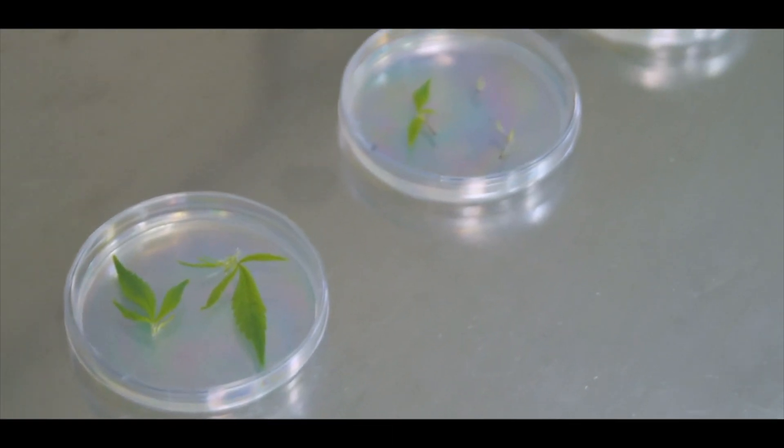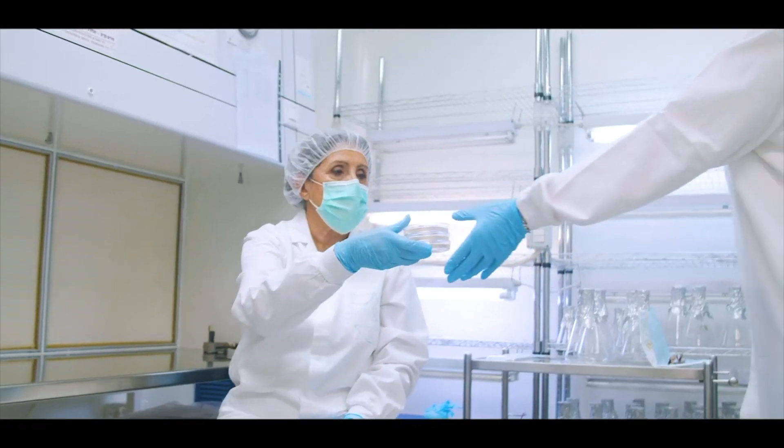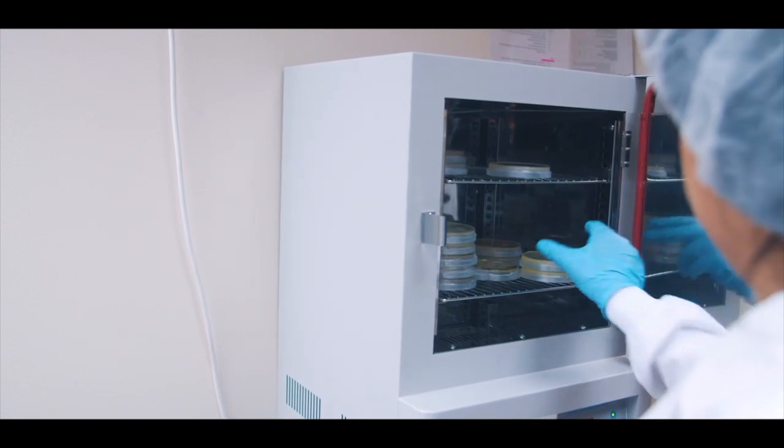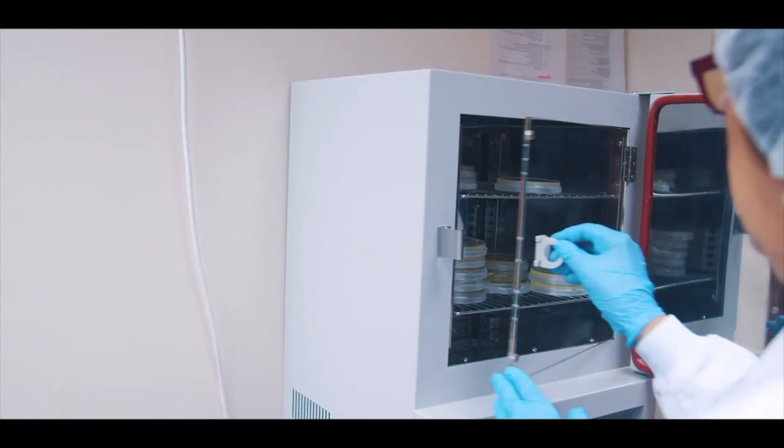The biofarming technology mimics nature, and as such the petri dish is stored in controlled temperature, light intensity, and oxygen amounts that are required for the plant cells to grow.